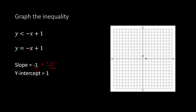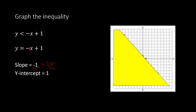Now I'm going to draw the line. Because it is less than, less than means the numbers will be smaller, so it's saying y is smaller than this line. Where does y get smaller? Y gets smaller as it goes down lower on the y-axis. So when it says y is less than negative x plus 1, I'm going to shade in everywhere where y is smaller than this line — which is going to be below. So I'm going to shade in everything below.